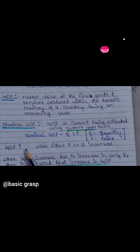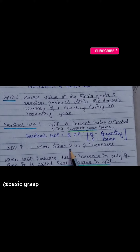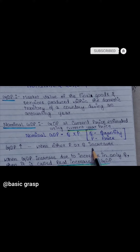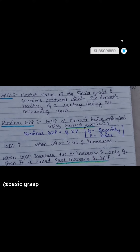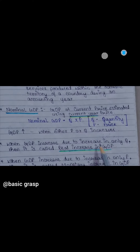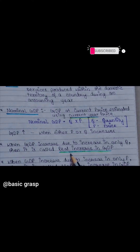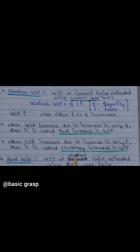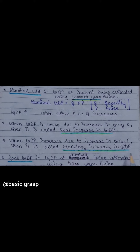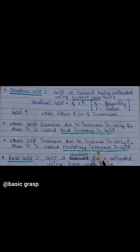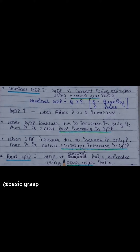When does the nominal GDP increase? Either P increases or Q increases. When GDP increases because only P increases, then we will say it is a monetary increase in GDP.